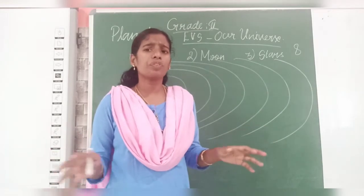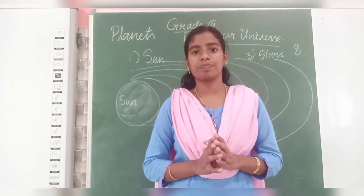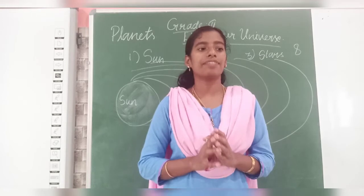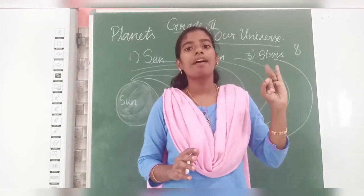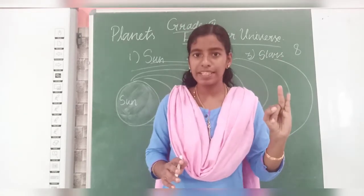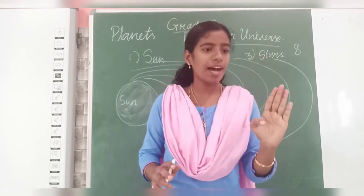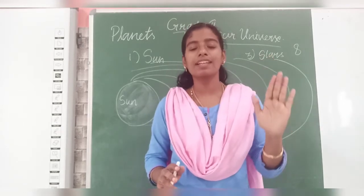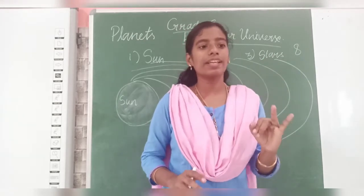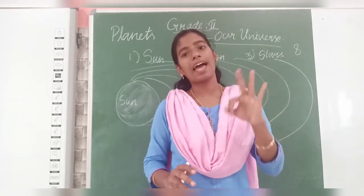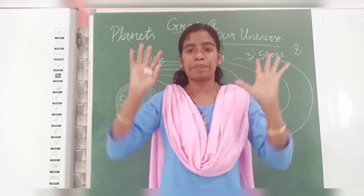How many of you know the names of these eight planets? The first one is Mercury, then Venus, Earth, Mars, Jupiter, Saturn, Uranus, and Neptune. Eight planets.